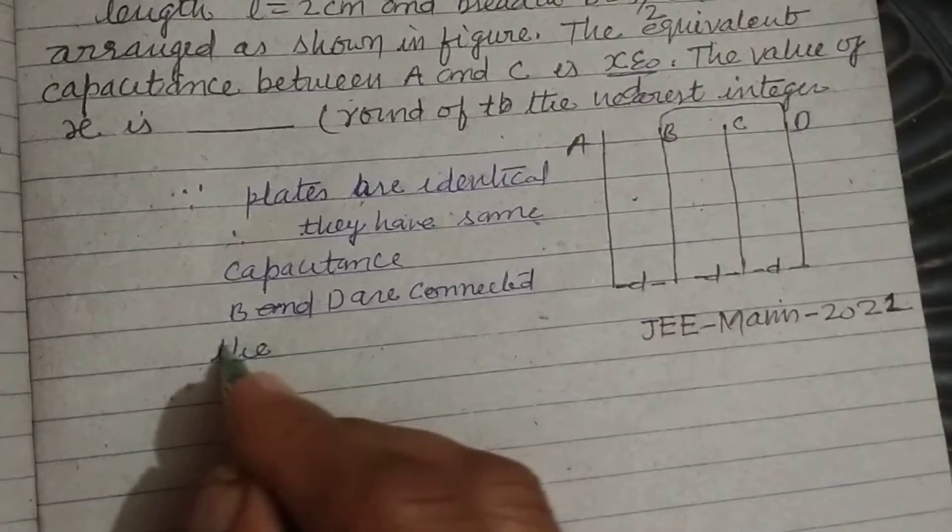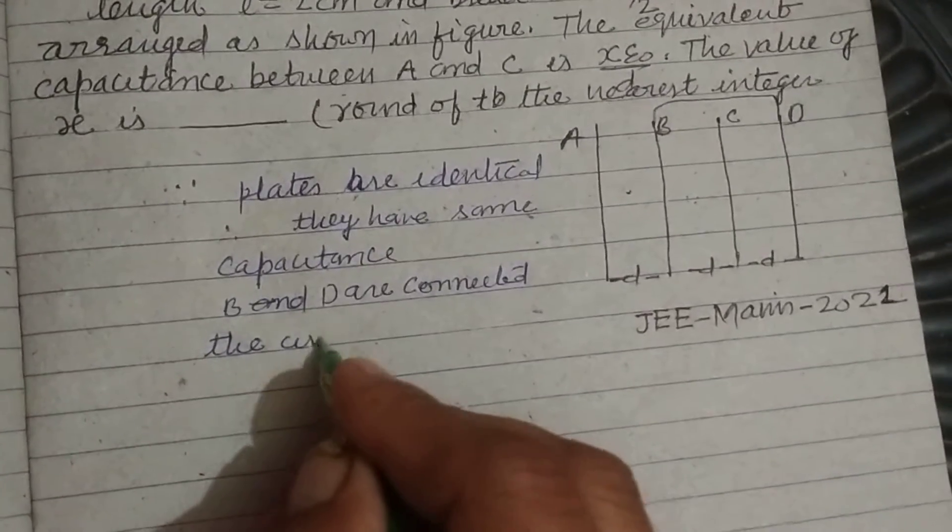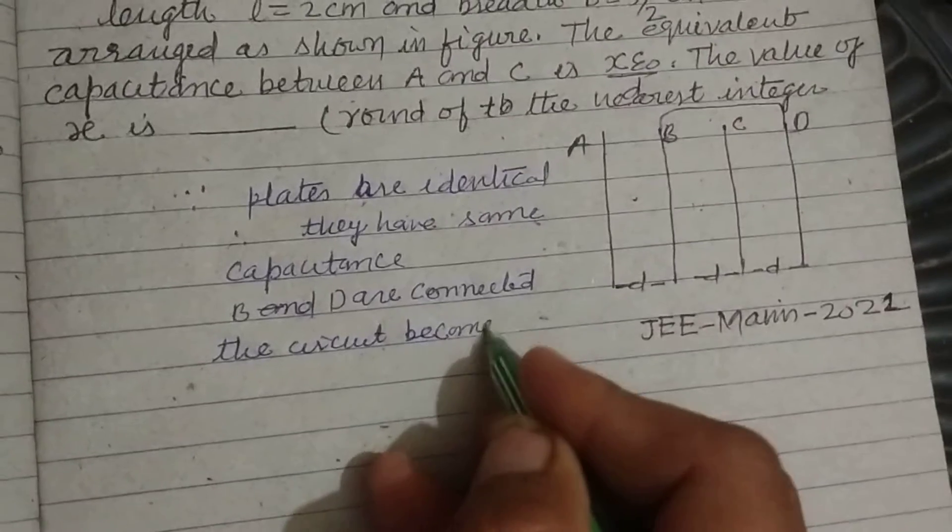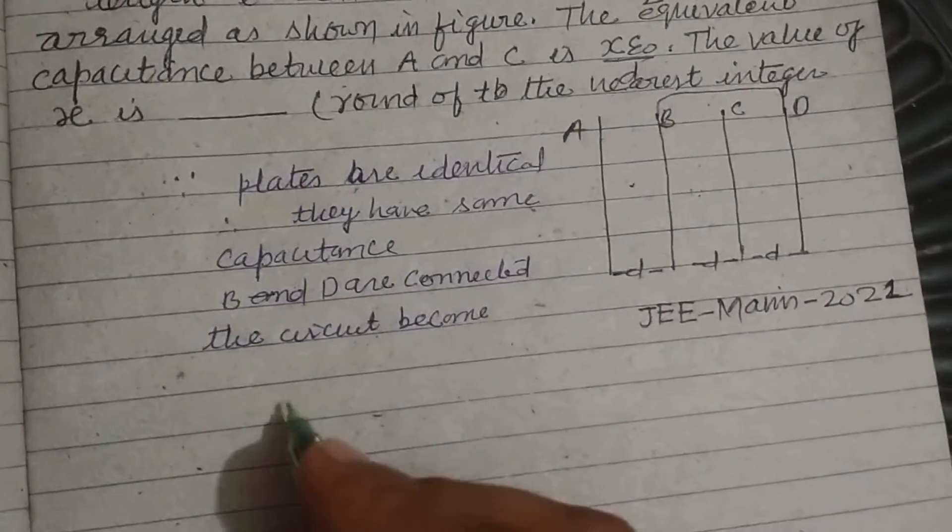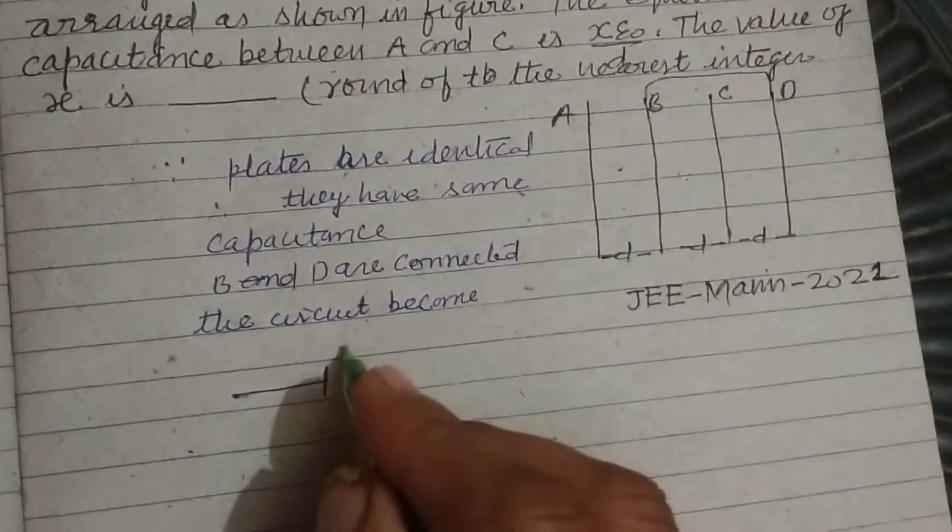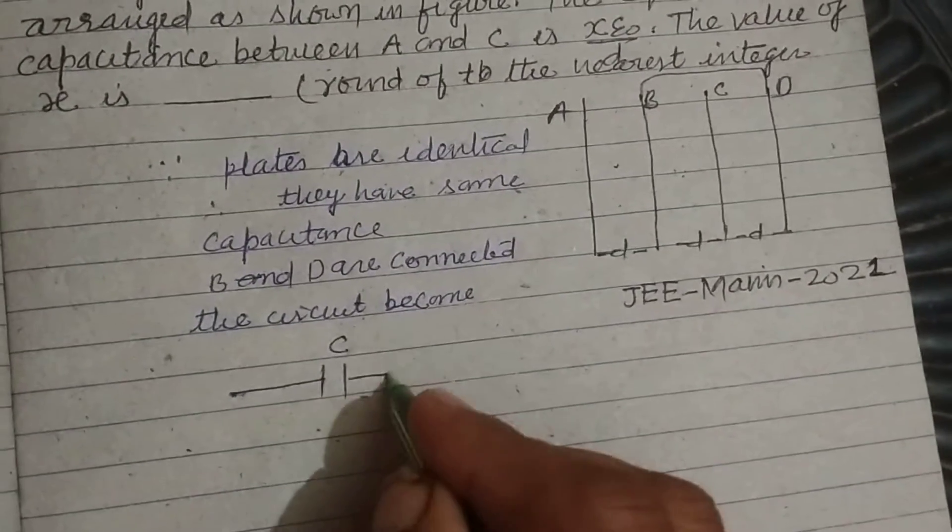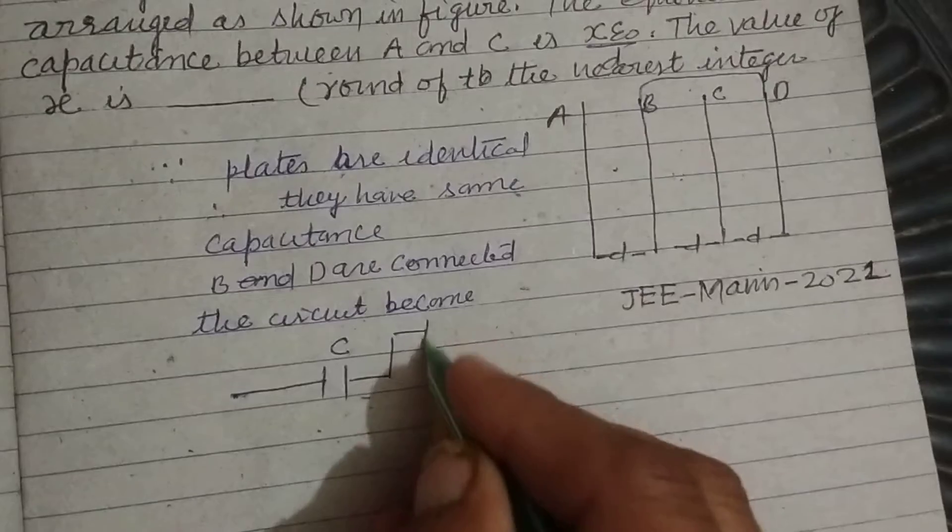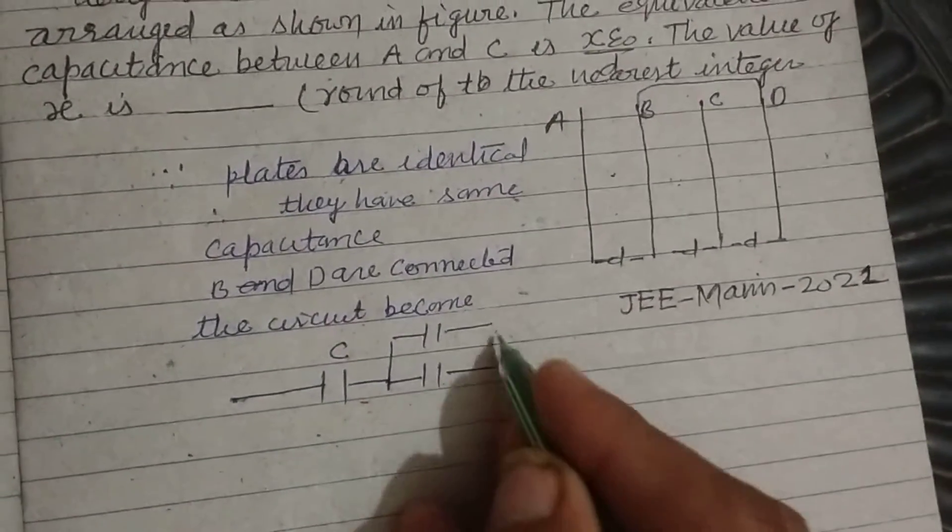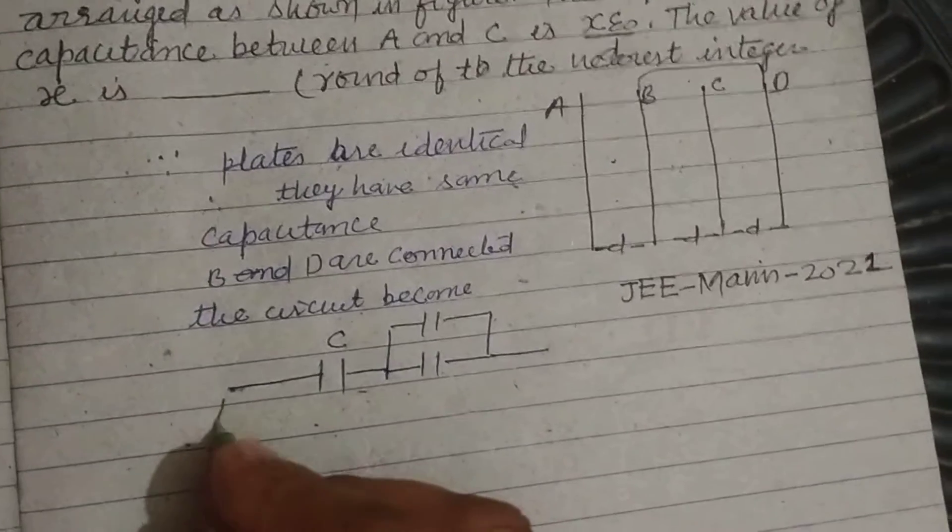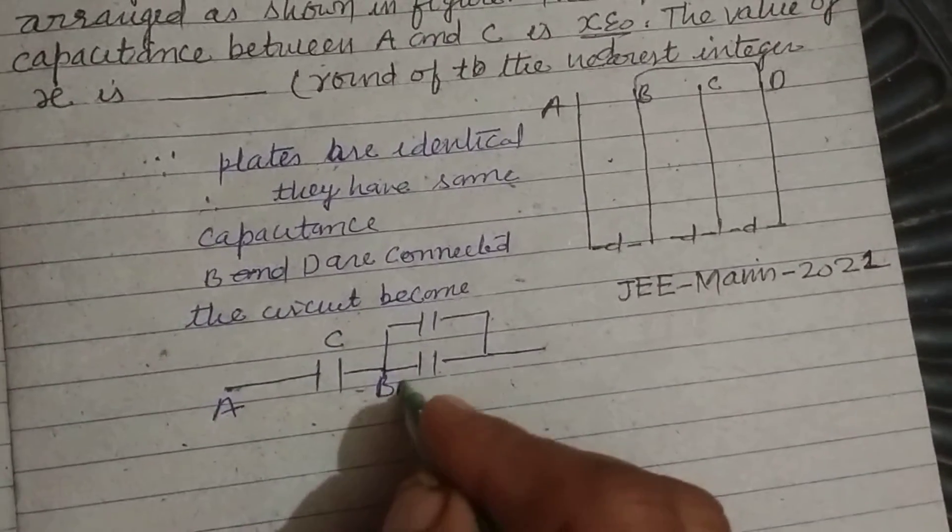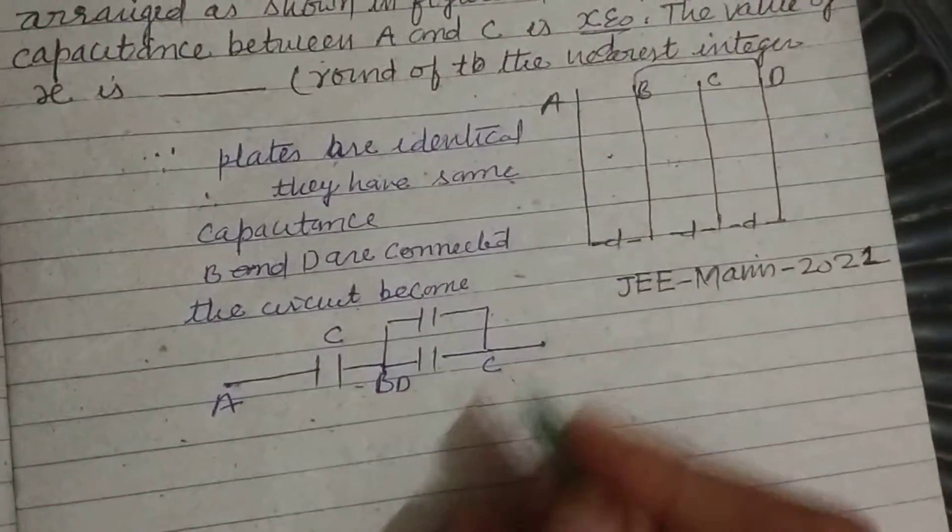Therefore, the circuit becomes: this is the first plate having capacitance C and these two connected in parallel. So this is A and this is B and D and this is C.